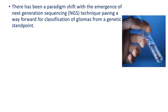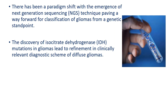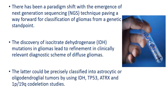There has been a paradigm shift with the emergence of next generation sequencing techniques paving a way forward for the classification of Gliomas from a genetic standpoint. The discovery of isocitrate dehydrogenase mutations, the IDH mutations in Gliomas, have led to a refinement in the diagnostic scheme of diffuse Gliomas. Diffuse Gliomas can be precisely classified into astrocytic and oligodendroglial tumors using IDH, TP53, ATRX, and 1P19Q co-deletion studies.